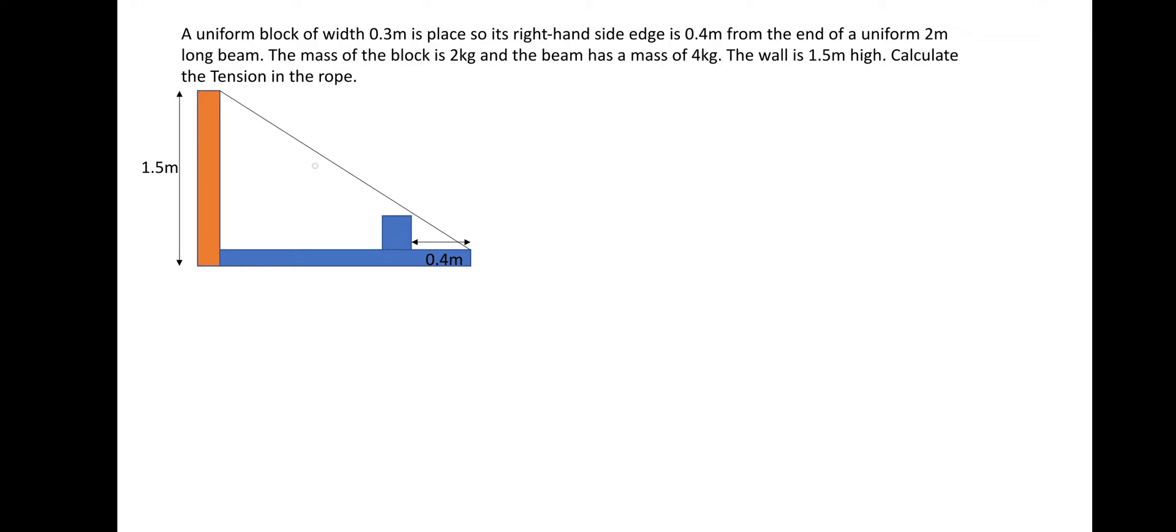So we're after the tension in the rope. And this question is actually a moments question combined with equilibrium. So a uniform block of width 0.3 meters is placed so its right hand side edge is 0.4 meters from the end of a uniform 2 meter long beam.